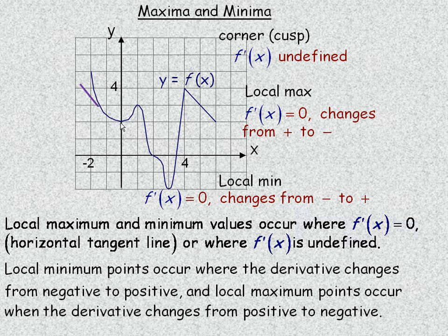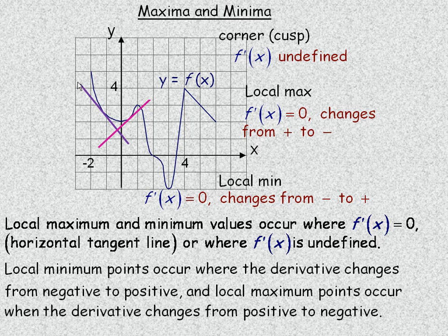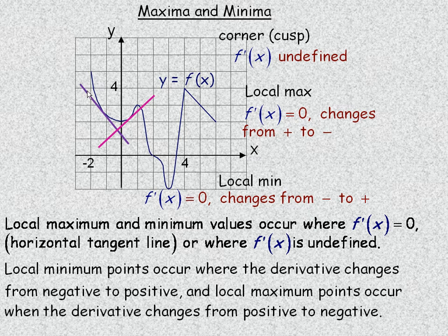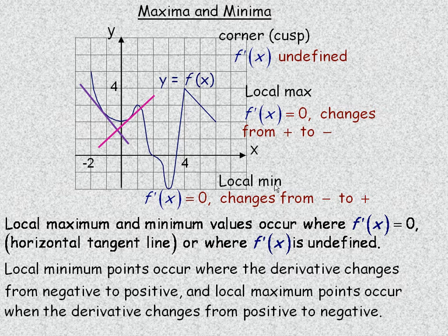For this local minimum point, I'm going to draw a tangent line to the left of it and also a tangent line to the right of it. Notice that the tangent line changes from having a negative slope on the left to a positive slope on the right. We can also interpret that as having a negative derivative value on the left to a positive derivative value on the right side of that local minima. So one of the characteristics of local minima is that the derivative changes from negative to positive as you go from left to right.